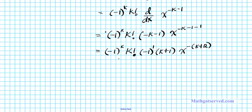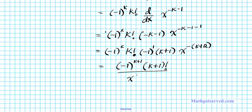We can use the properties of exponents to combine the two terms. Negative 1 to the k times negative 1 to the 1 — when multiplying exponents with the same base, you add the powers — so this gives negative 1 to the k plus 1. Now using the definition of factorial, k factorial times k plus 1 is simply k plus 1 factorial. And using the reciprocal property of exponents, x to the negative k plus 2 becomes over x to the k plus 1 plus 1.